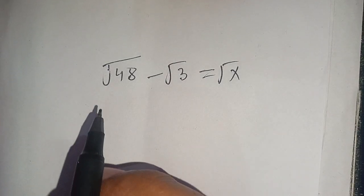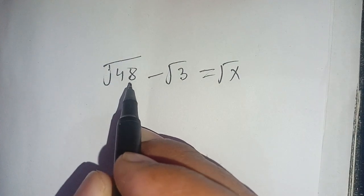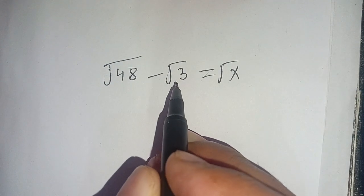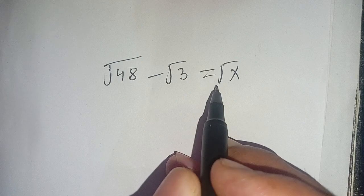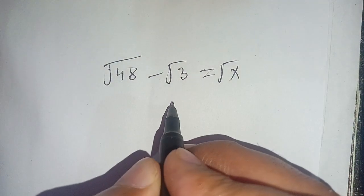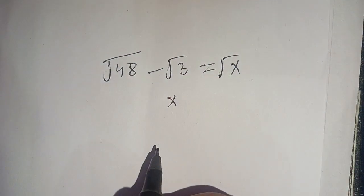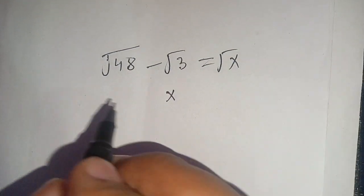Hello everyone. In today's video we are going to solve square root of 48 minus square root of 3 is equal to square root of x, and we have to find the value of x. Let us solve this.